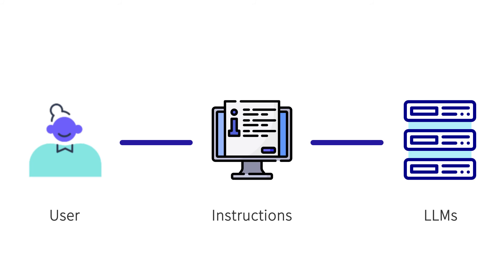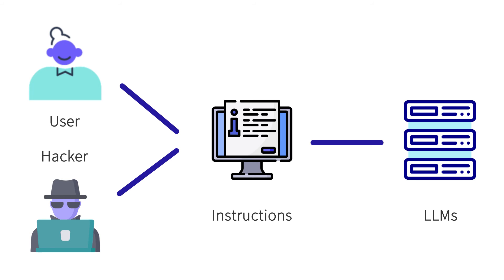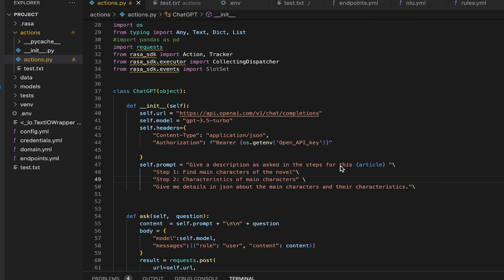So what is prompt injection? We previously saw what prompt engineering is — the user provides instructions for the language model to perform a certain task. But if the user can influence the language model, so can a hacker, who can intentionally make a large language model produce certain outputs, or even ask for data or instructions that the large language model has been trained on.